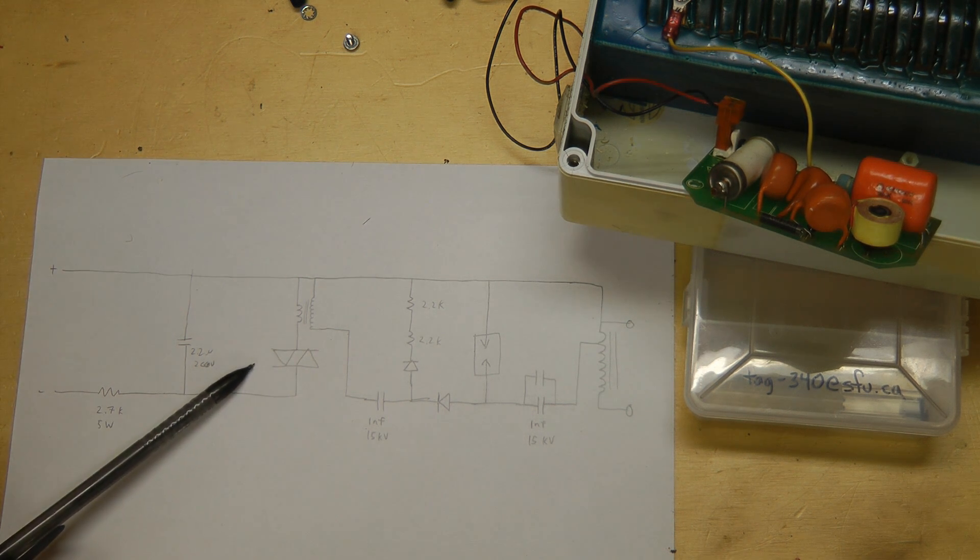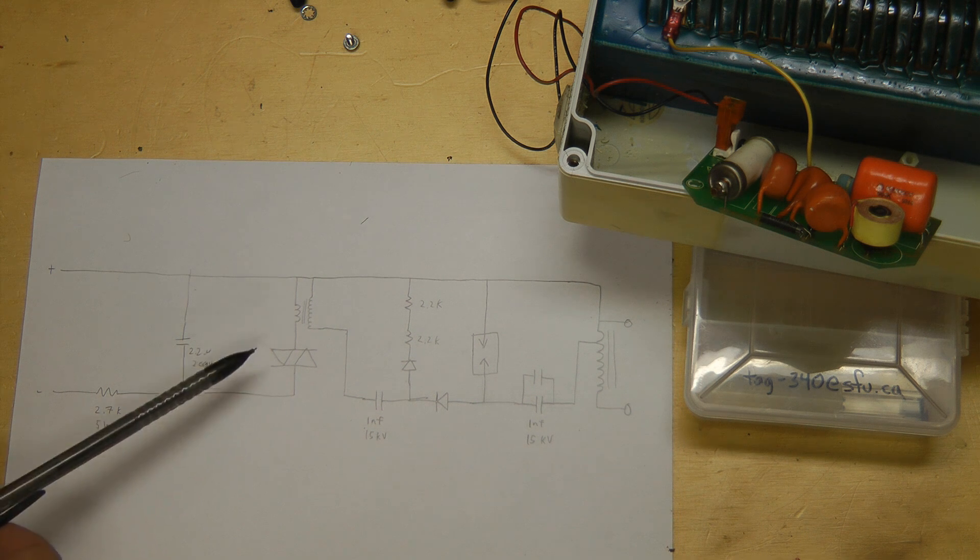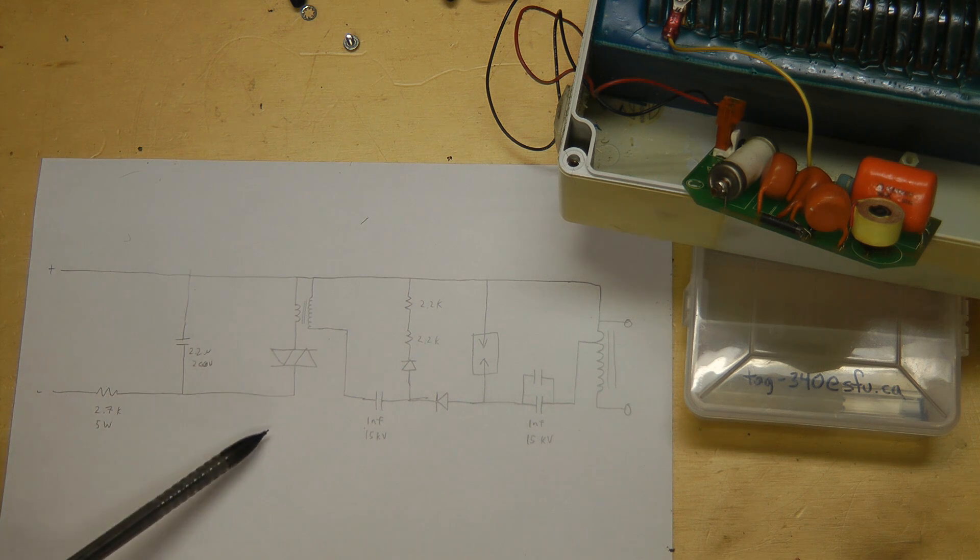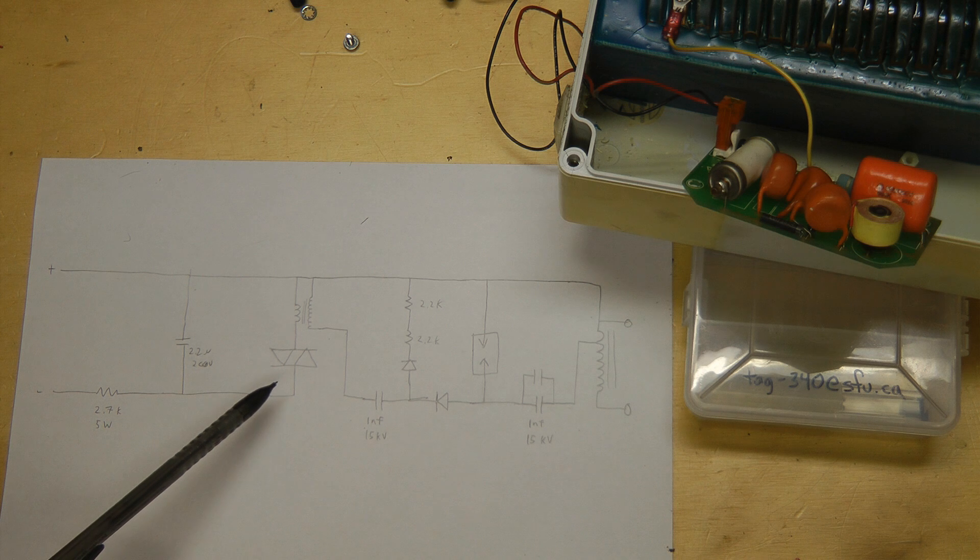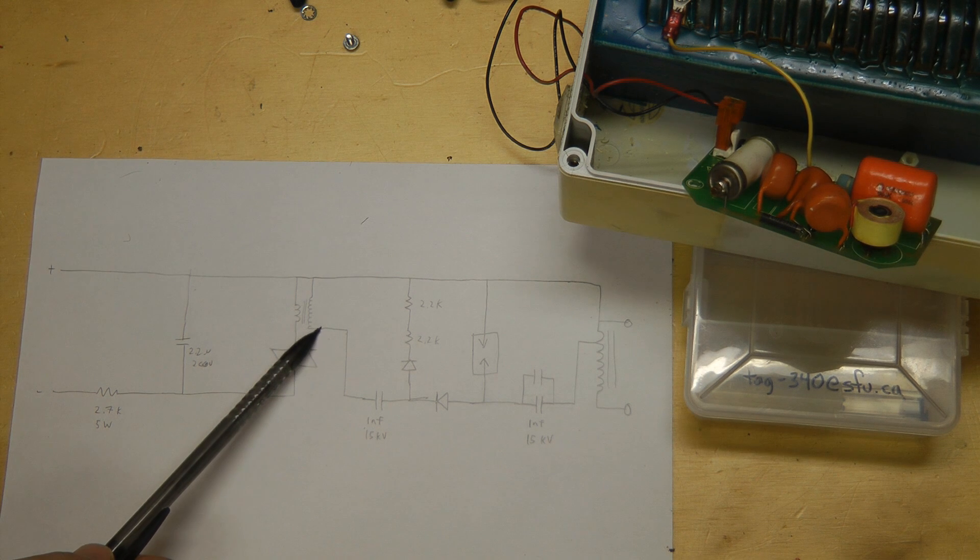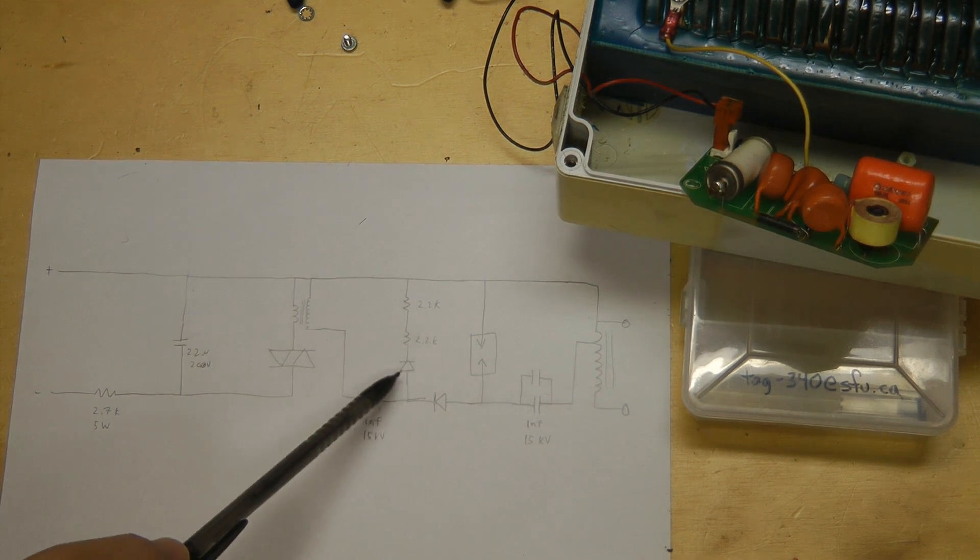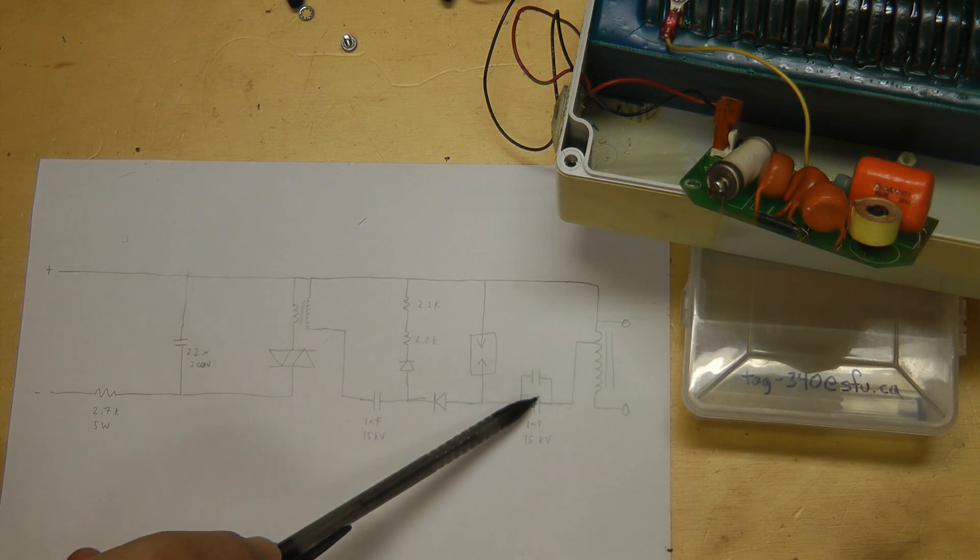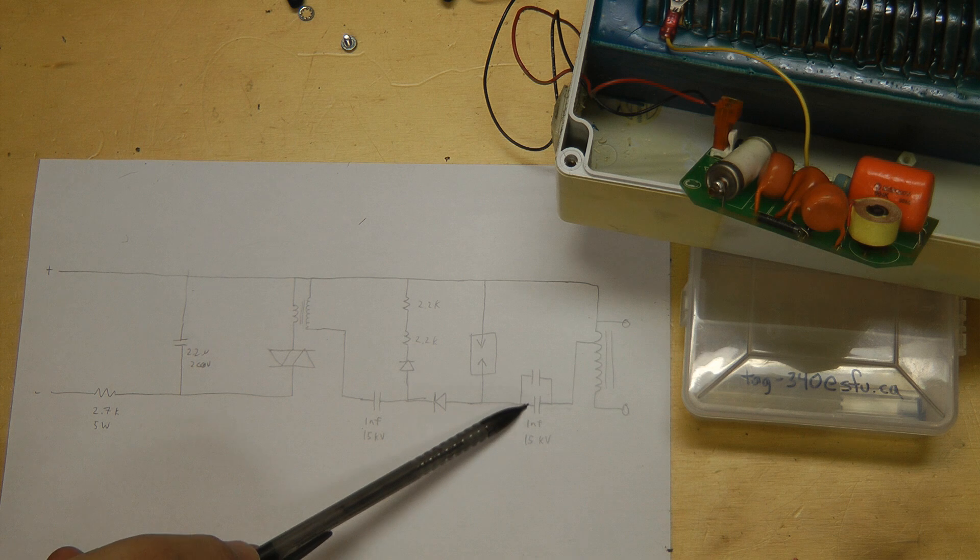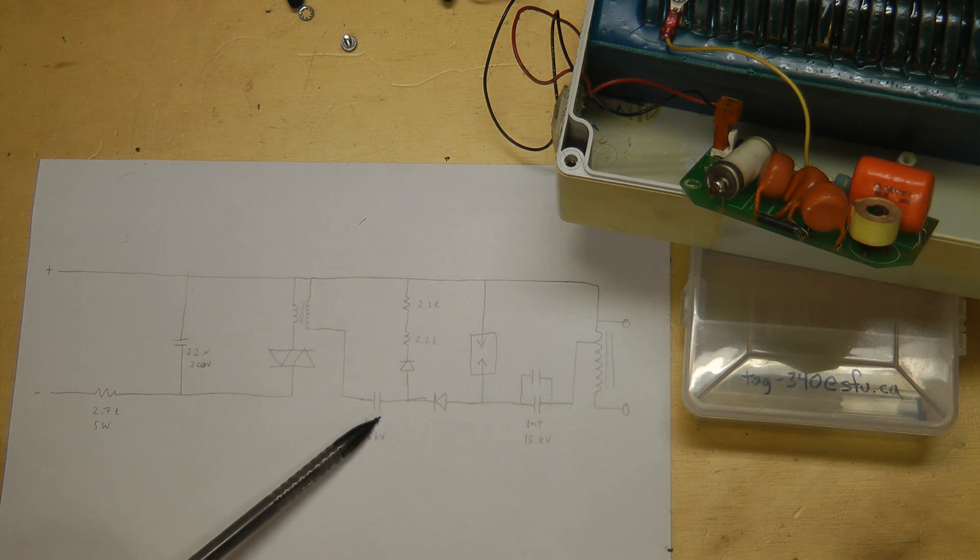A DIAC is basically almost a solid state spark gap. It has a high impedance initially. When the voltage across it gets high enough, it becomes low impedance, almost a short circuit. So this repeatedly charges up and discharges, generating a pulsing voltage waveform on the output. That goes through just a voltage doubler. That charges up these capacitors. These are 15 kilovolts, 1 nanofarad.